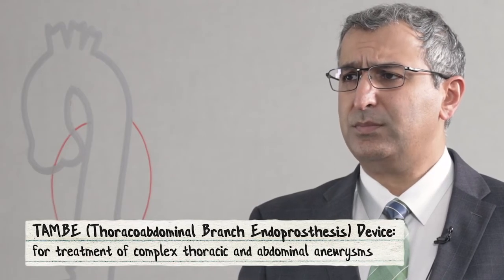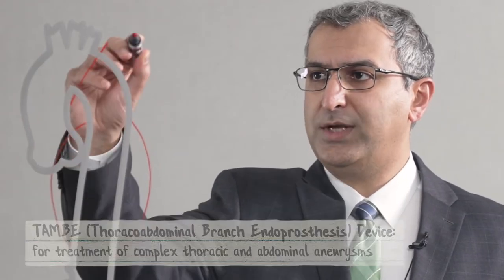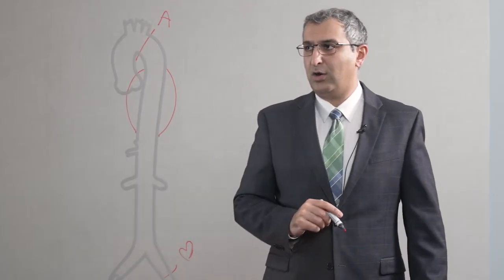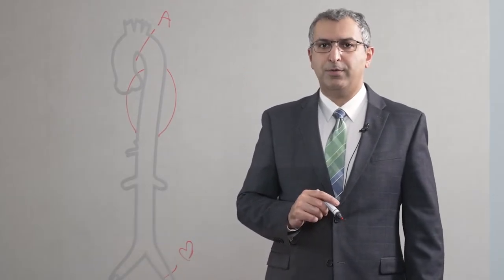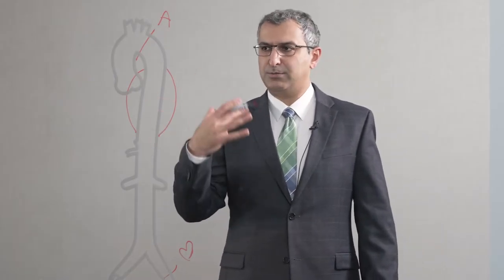The TAMBI procedure gives us an opportunity to treat the aortic aneurysm somewhere from point A all the way down to point B. There are patients that are older and frail and they are not capable of tolerating an open surgery, so a TAMBI graft that has multiple branches can effectively treat this aneurysm.